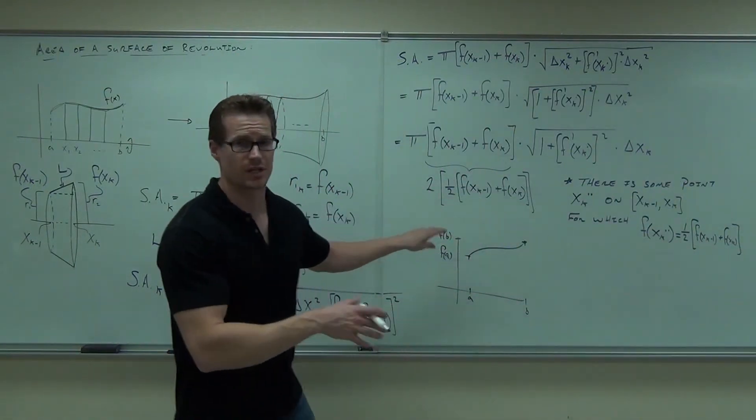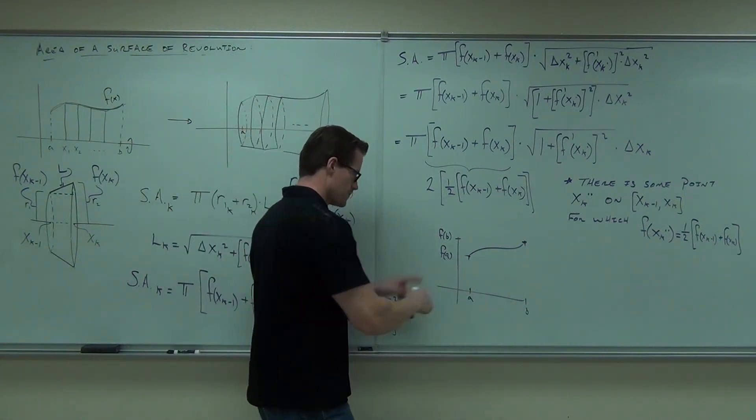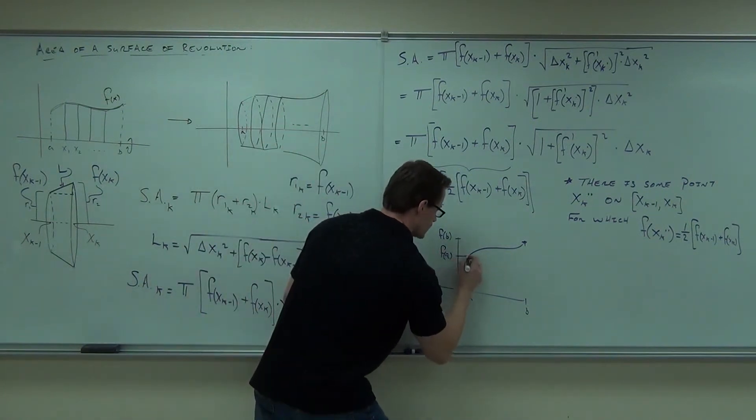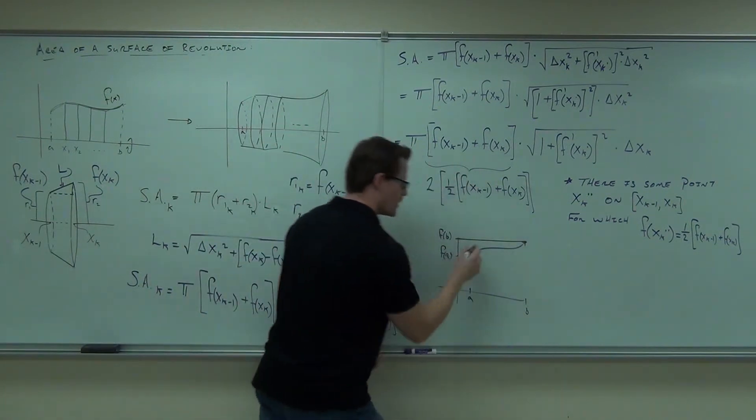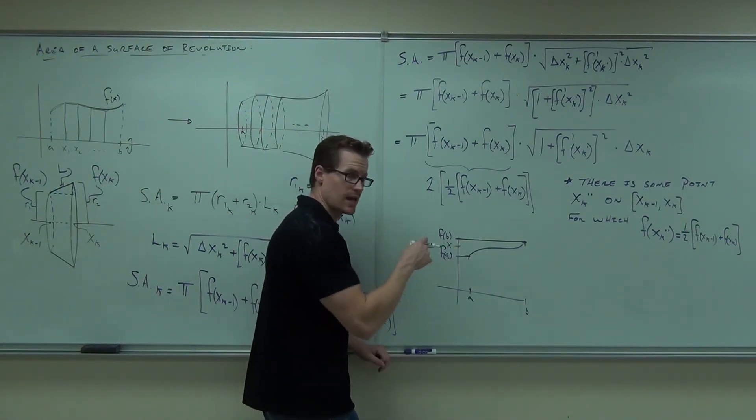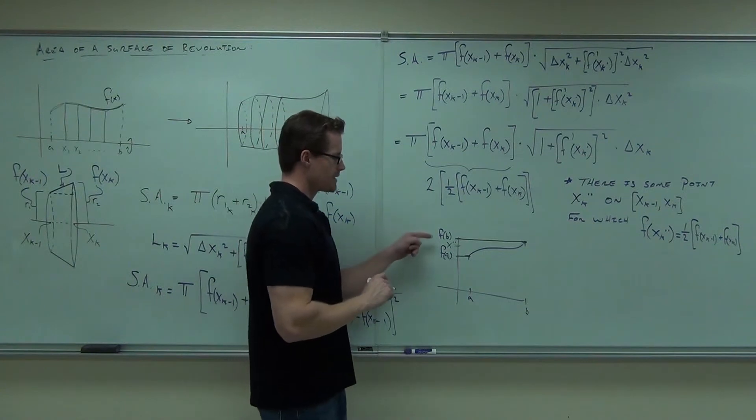Basically, it says this thing, this is what I'm using in English, it says, hey, pick a point between here. Pick some point between here. Call it x. We're calling it xk dot dot. So maybe I'll put the dot.